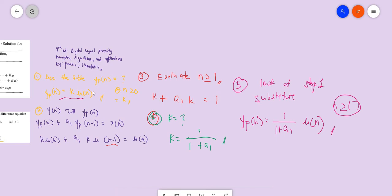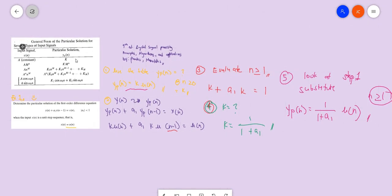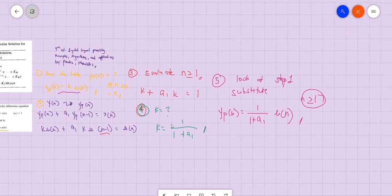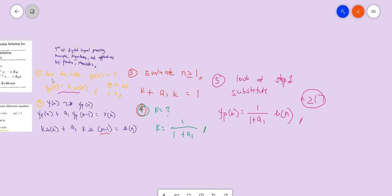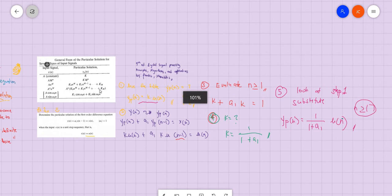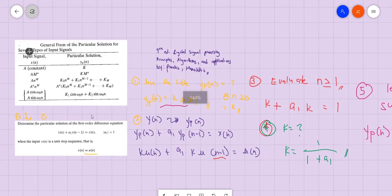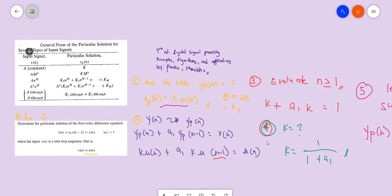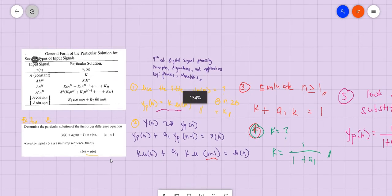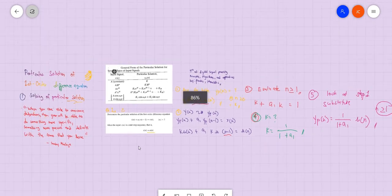Just to summarize: first is you find this one using this table, and then after that you substitute and then evaluate to simplify, find the value of k, and then substitute the value of k into this equation. So that's why this table is important in solving particular solution. In my next video I will have an example for the second order difference equation.